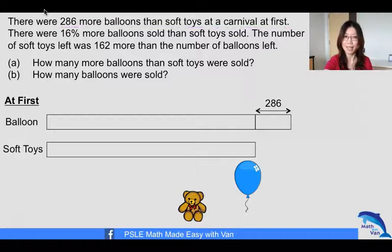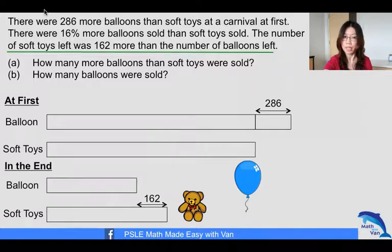Move on to the next one. In the end, we are told that the number of soft toys left was 162 more than the number of balloons left. So in this case, we have a situation whereby the number of soft toys was more than the number of balloons.